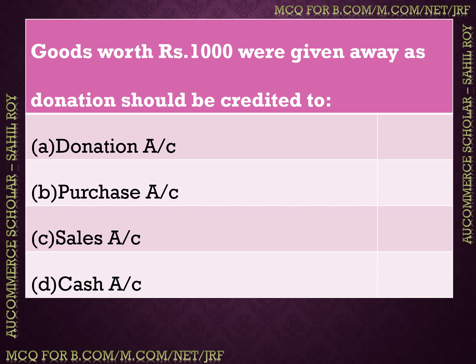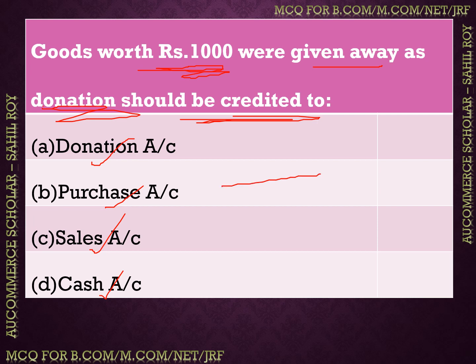Next question: goods worth rupees 1000 given away as a donation — where should this be credited? We had purchased goods for resale, and we donated them. The options are: donation account, purchase account, sales account, or cash account. The correct answer is option B — donation should be credited to the purchase account — because we had purchased those goods and then donated them.